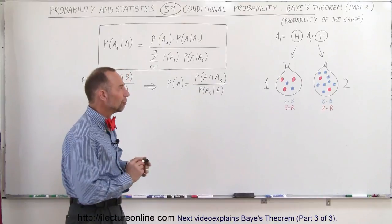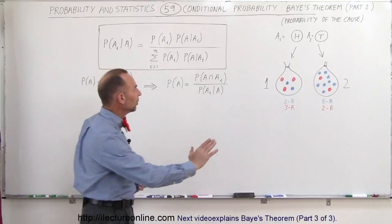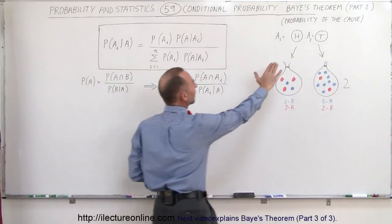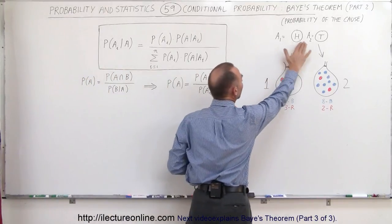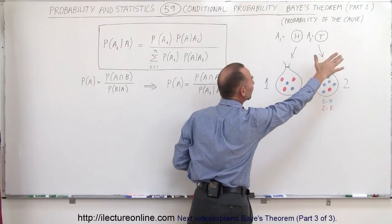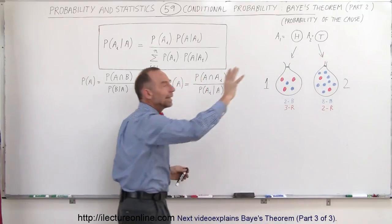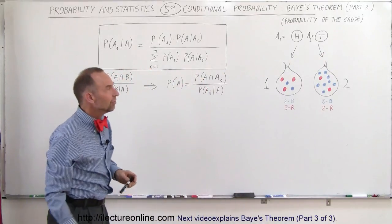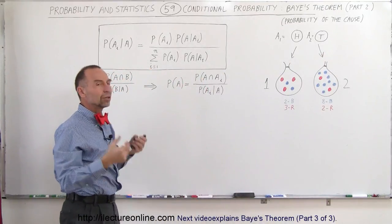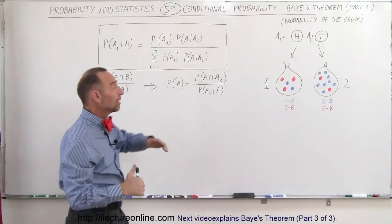In a more general form, remember that A sub i can be A1, A2, A3, A4 — some independent event that will then cause us to do something else.